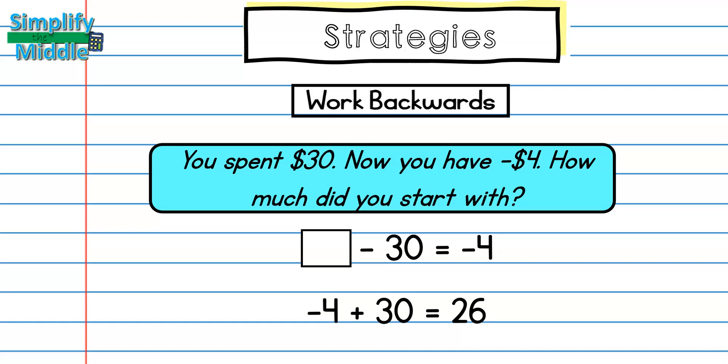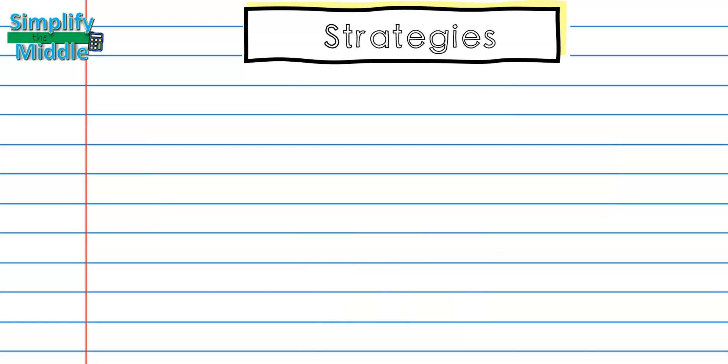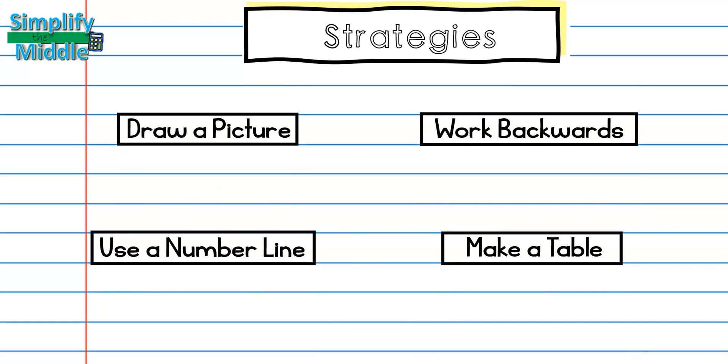Remember you always want to take your answer and plug it back in to make sure that it makes sense. So 26 minus 30 is negative 4, so this answer makes sense.